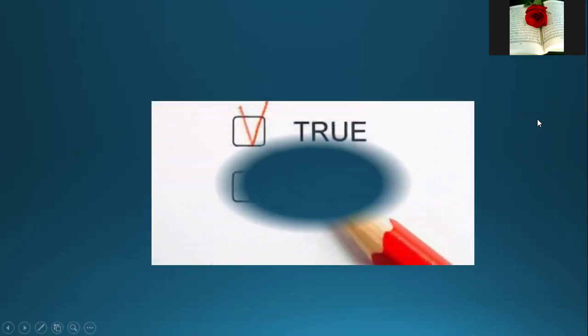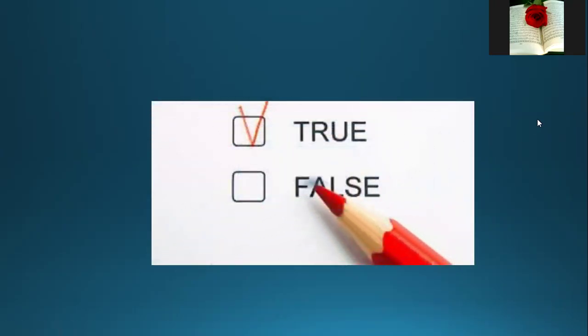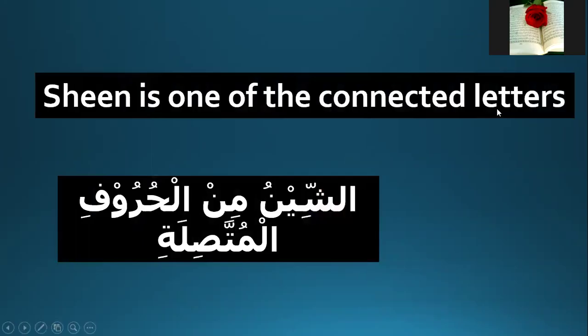Let's start with the first question: True or false. Number one — please tell me, true or false? Sheen is one of the connected letters.